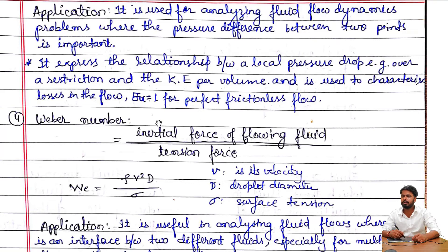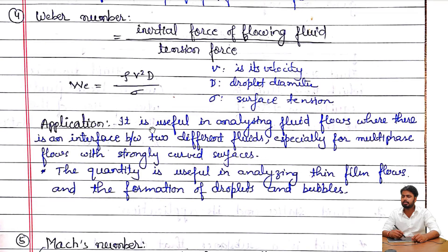Weber number is defined as inertial force of a flowing fluid divided by surface tension force, equal to ρv²d/σ, where v is velocity, d is droplet diameter, and σ is surface tension. Its application is in analyzing fluid flows where there is an interface between two different fluids, especially for multi-phase flows with strongly curved surfaces, and in analyzing the formation of droplets and bubbles.